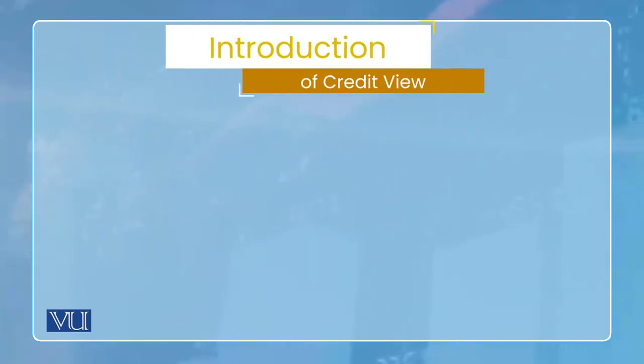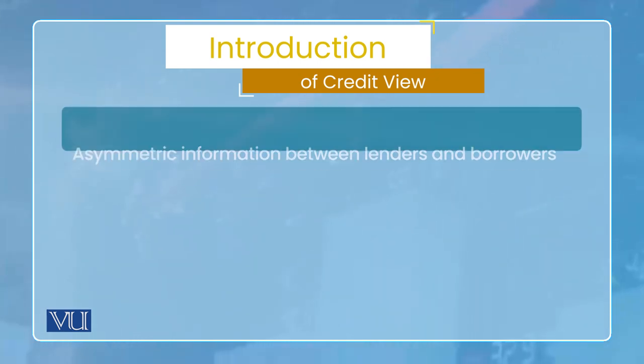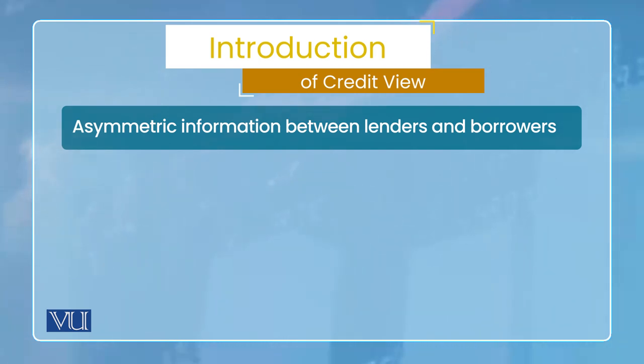चूँकि ये पहला credit view का हमारा lecture है, तो credit view में जो कुछ concepts हैं जो role play करते हैं, मैं उनको पहले explain करना चाहूंगा। देखें, market में एक asymmetric information होती है - किसके दरमियान? Lenders और borrowers के दरमियान। Market के अंदर कुछ लोग ऐसे हैं जिनके पास funds available हैं and they want to lend, जबकि कुछ borrowers हैं जिनके पास investment के लिए projects मौजूद हैं, business plan मौजूद है, business idea मौजूद है and they need financing।